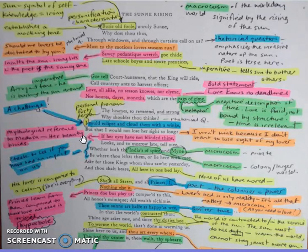And he says, ask for those kings whom thou saw yesterday, and thou shalt hear, all here in one bed lay. So he's basically saying there that all stately people will bend to this notion of love, and that they will be impacted on by Donne, and his sense of importance about his romance.